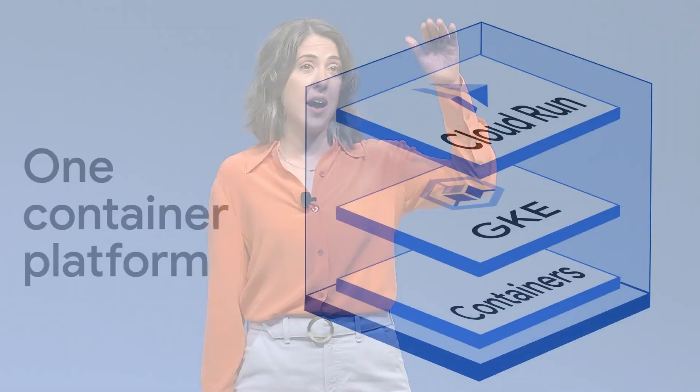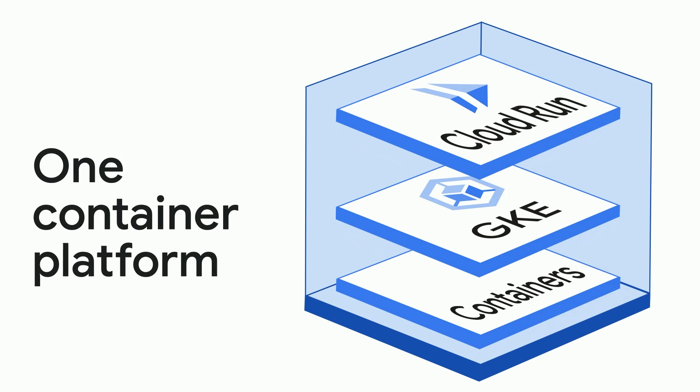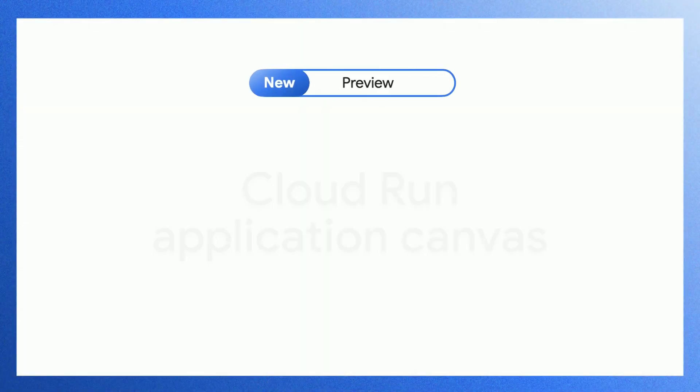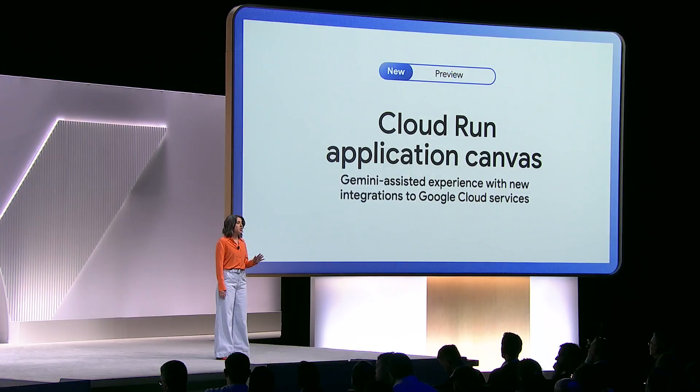Our container management platform includes both GKE and Cloud Run, built from the ground up with flexibility, optionality, security, and cost optimizations — meeting the needs of every company, from the AI unicorn to the traditional enterprise. No choice is a one-way door. If you're looking for the easiest way to build applications, point your developers to Cloud Run for optimized productivity. Today, we are making things even easier. I'm excited to announce Cloud Run Application Canvas, a Gemini-assisted experience to generate, modify, and deploy Cloud Run applications.